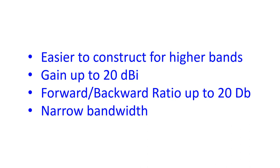Yagi-Uda antennas can have gains up to 20 dBi and a front-to-back ratio of up to 20 dB. The radiation pattern is linearly polarised — with horizontal polarisation for a horizontally mounted antenna and vertical polarisation for a vertically mounted one.